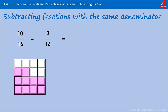Here's one for you to try: 10 sixteenths take away 3 sixteenths. Pause the video, have a go. How many sixteenths will there be left? We have a numerator of 10 take away a numerator of 3, which leaves you with 7 sixteenths.